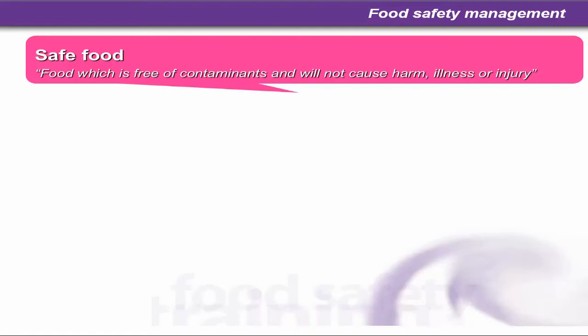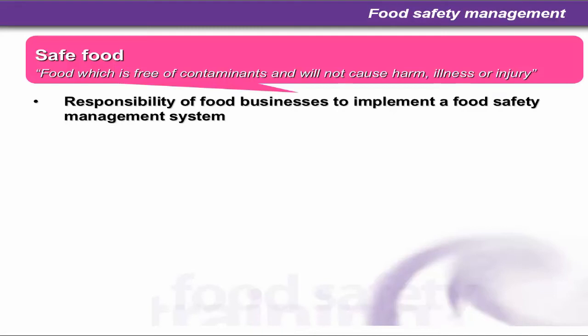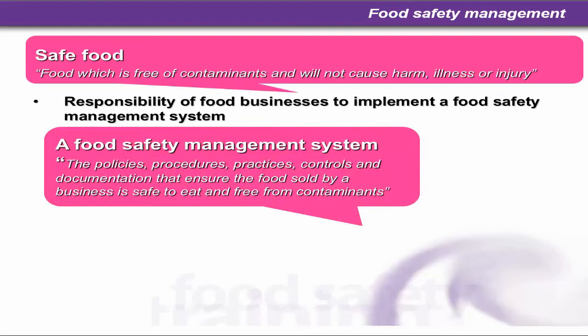There should be nothing in the food which could cause damage or injury. From a customer point of view, we should be able to go out and expect — demand, in fact — safe food from the people that supply us. And in turn, we as food handlers must provide food that is safe. It is the responsibility of all food businesses to implement a food safety management system, which covers the policies, procedures, practices, controls and documentation that ensure the food sold by a business is safe to eat and free from contaminants. We'll look at the major contaminants later on.